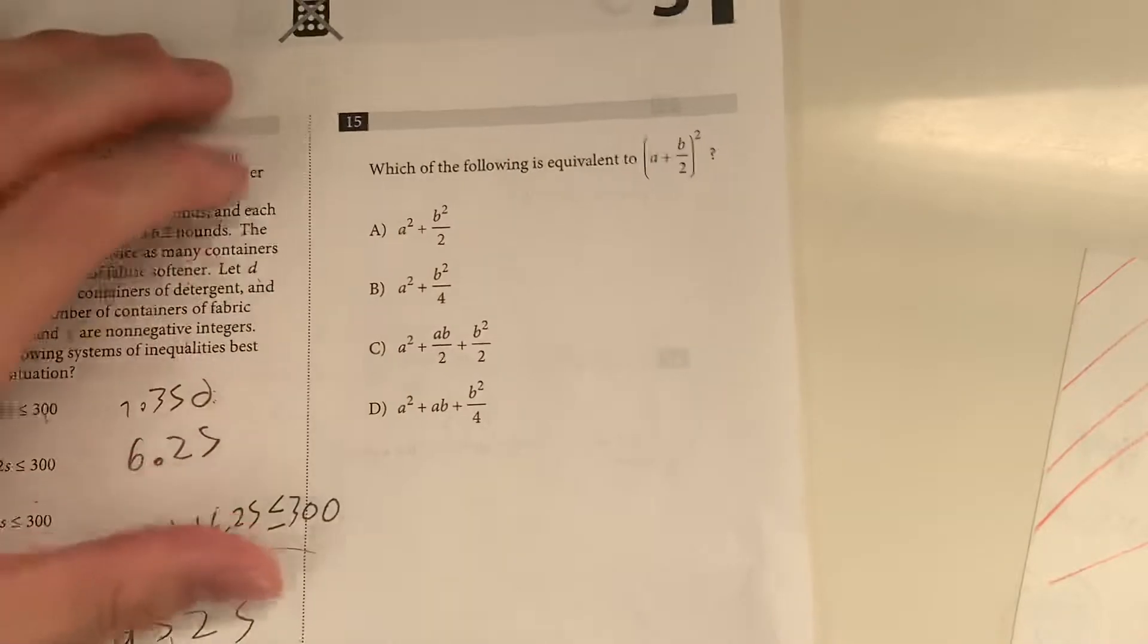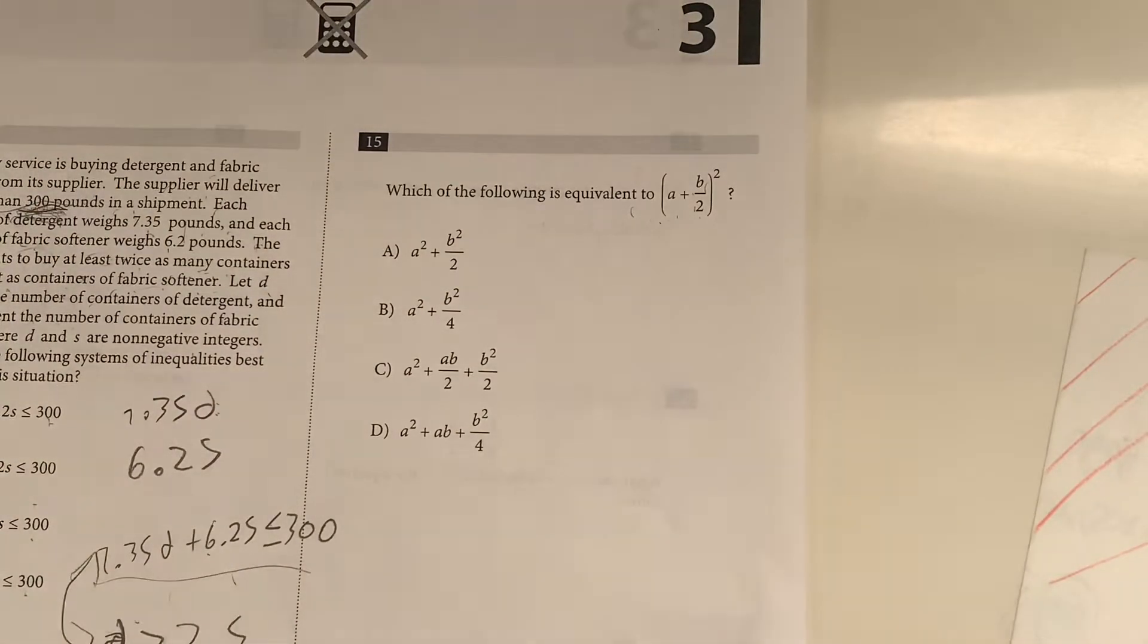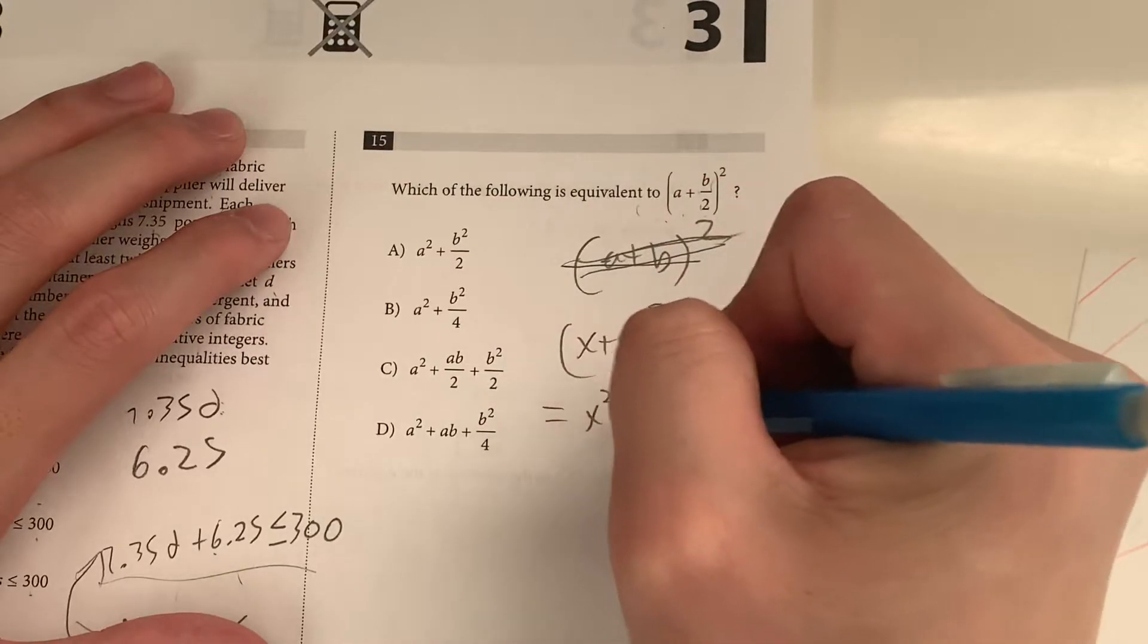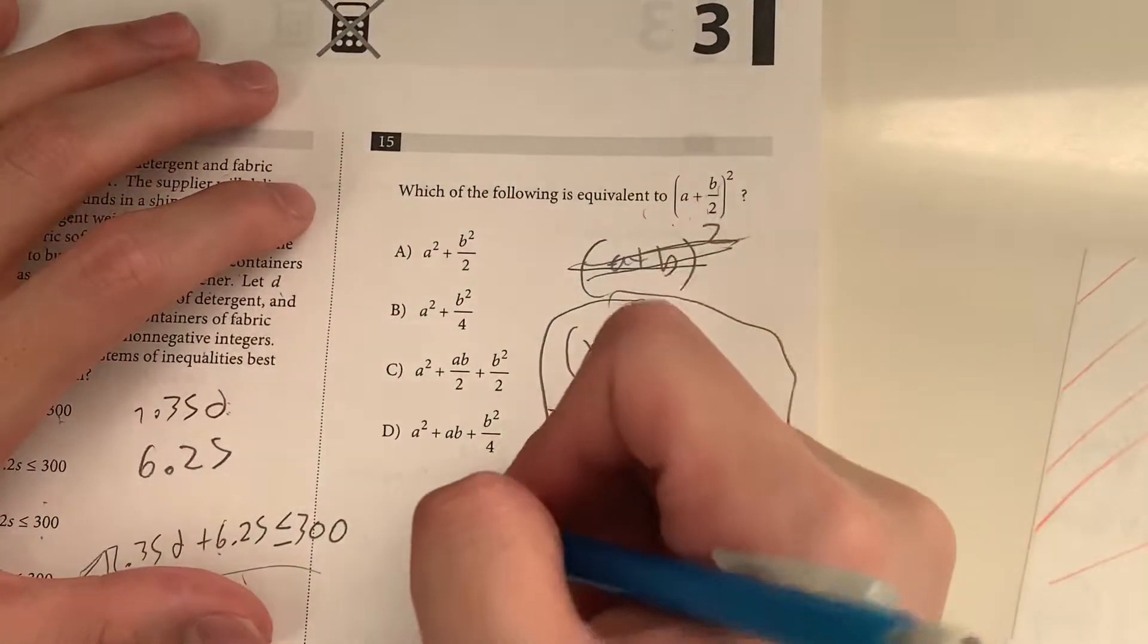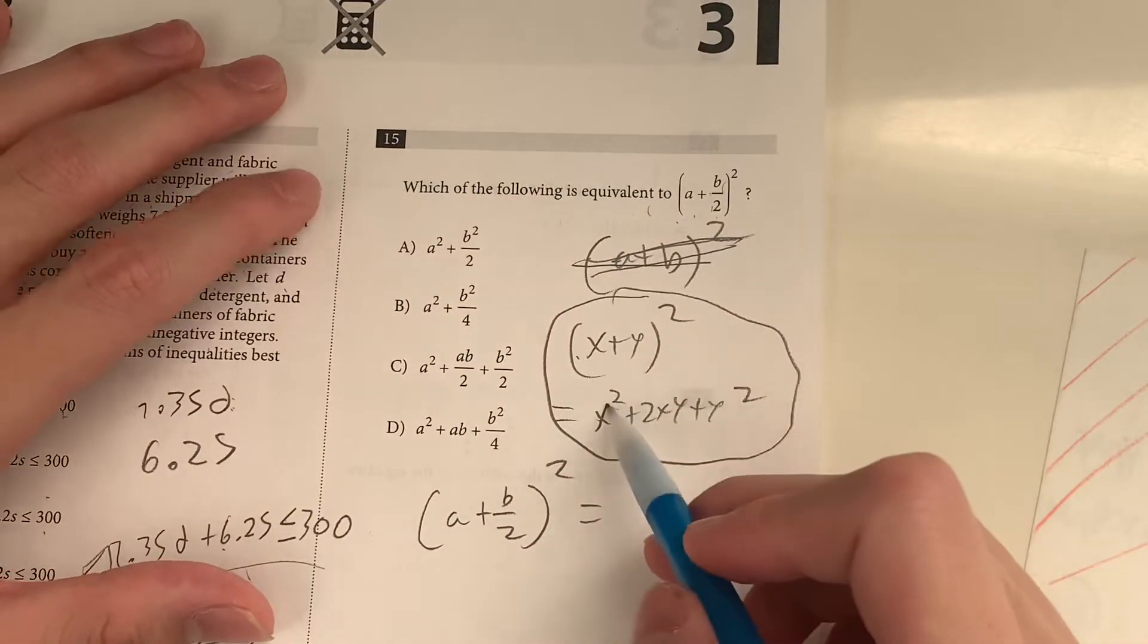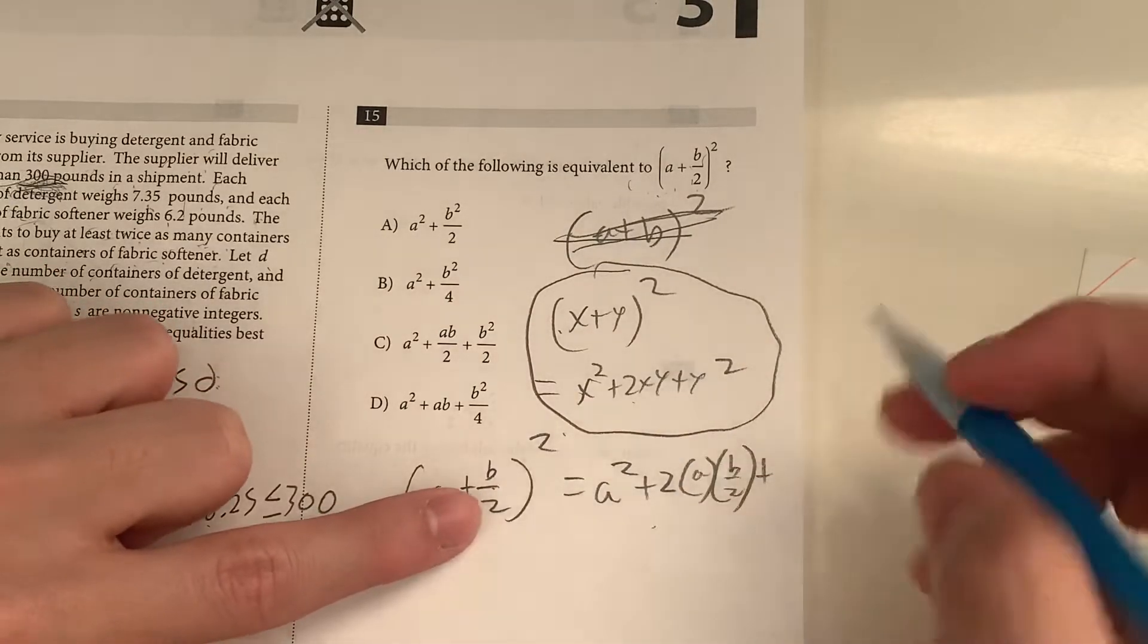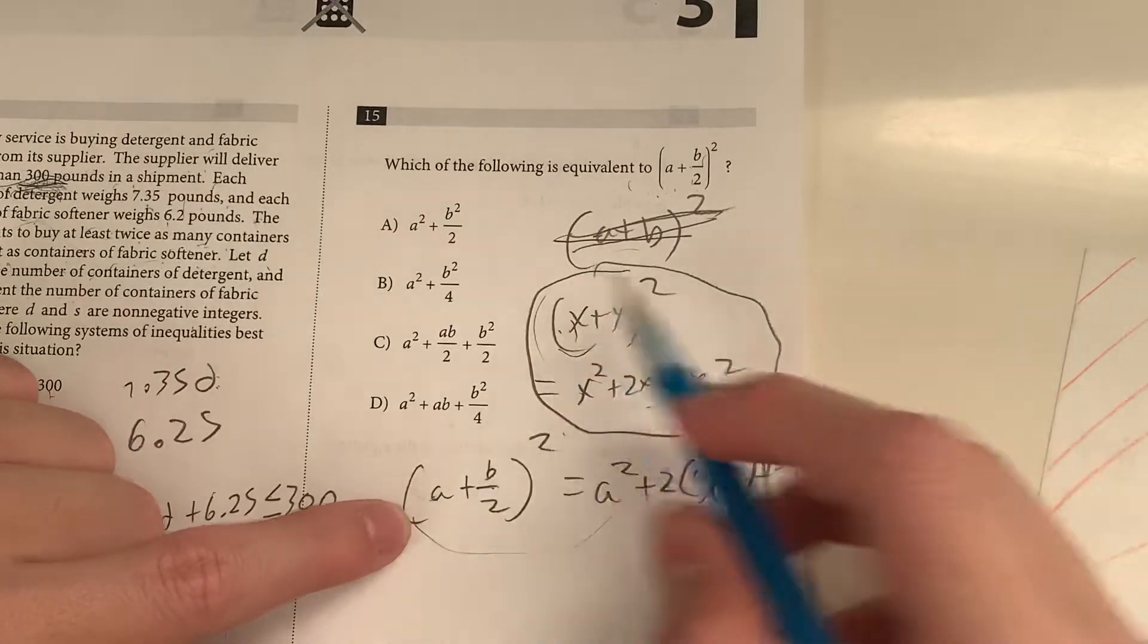Now, going on to our last question. This one doesn't seem too long. Which of the following is equivalent to A plus B over 2 squared. Okay, so this is simply just A plus B squared. Or I could just, instead of A plus B, I could use X plus Y squared. What's this equal to? This is equal to X squared plus 2XY plus Y squared. You should try to remember this formula right here. And it's pretty helpful. Why? Because we have the same situation. A plus B over 2 squared. Let's go to the first value squared. So A squared plus 2 times these two multiplied. So A times B over 2 plus last value squared. B over 2 squared. You see how I just simplified? I plugged in each value using this equation.